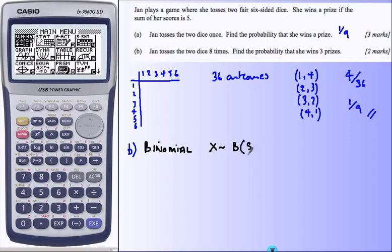Binomial, eight trials, one-ninth is the probability of success, and we're looking for the probability of three successes.